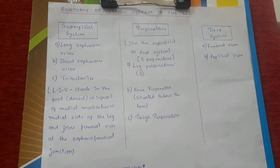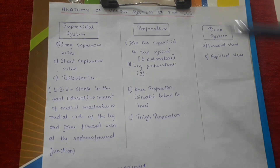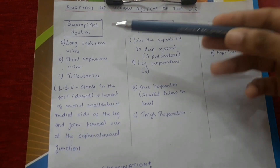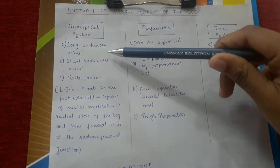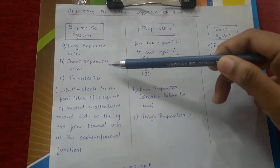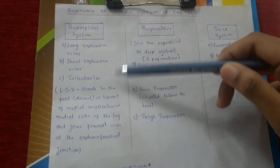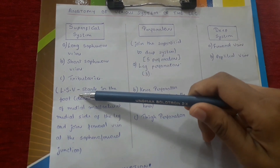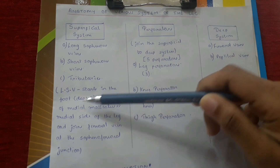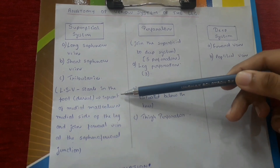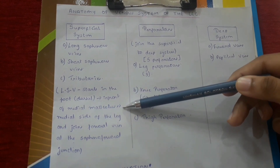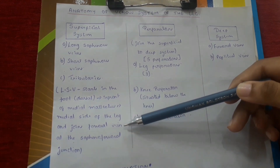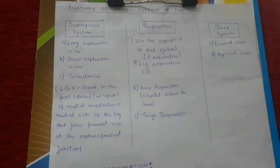Anatomy of the venous system of the leg: we have the superficial system, the perforators, and the deep system. In the superficial system, we have the long saphenous vein, the short saphenous vein, and the tributaries. The long saphenous vein starts in the foot at the dorsal aspect, in front of the medial malleolus, travels along the medial side of the leg, and joins the femoral vein at the saphenofemoral junction.